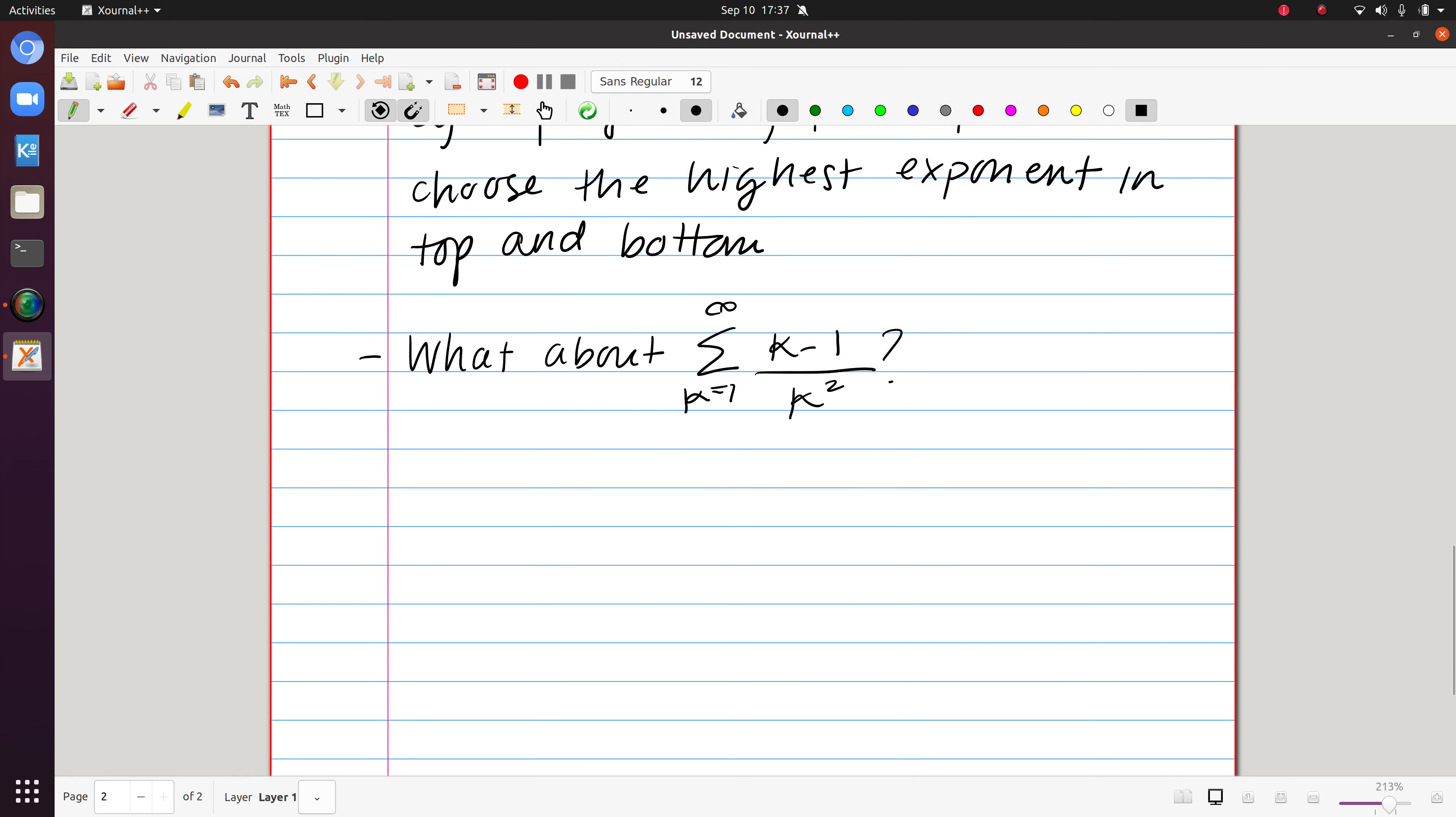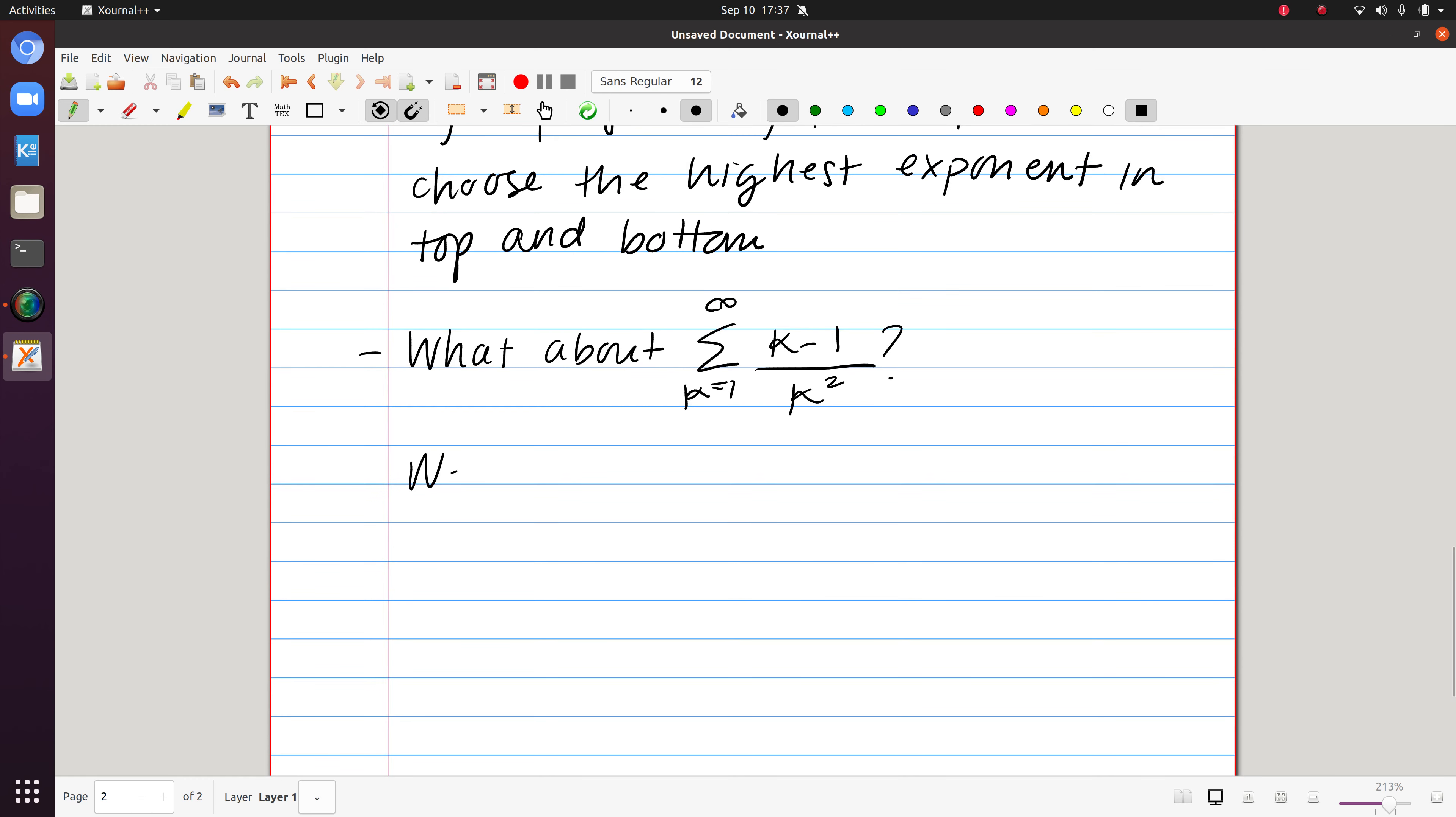But in this case, that's going to give us an upper bound. So we know that this series is bounded above by the sum of 1 over k, but this gives us no information,